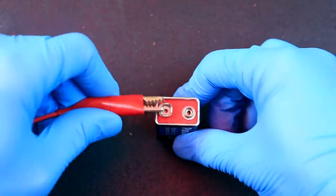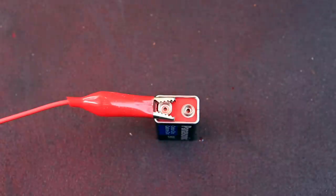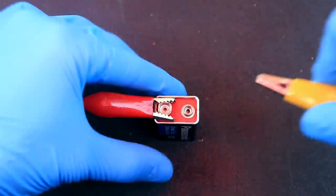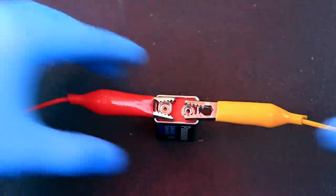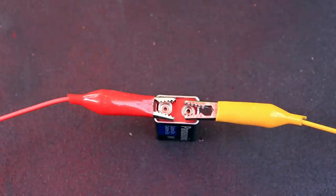Then to the power source, an alligator clip is attached to the positive and the negative terminals. The moment the circuit is completed by connecting the second alligator clip, the crystals should start to grow.